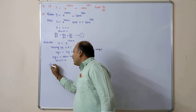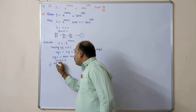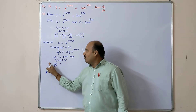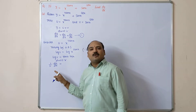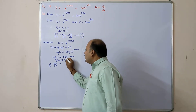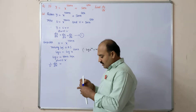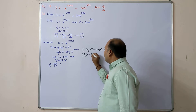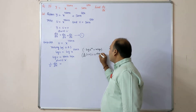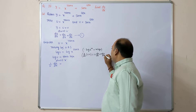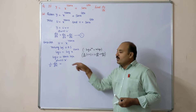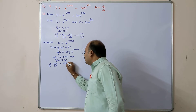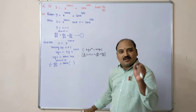The derivative of log u is (1/u) · du/dx. On the right side, apply the product rule d/dx(u·v) = u · d/dx(v) + v · d/dx(u). Here tan x is u and log x is v. So: tan x · d/dx(log x) = tan x · (1/x), plus log x · d/dx(tan x) = log x · sec²x.